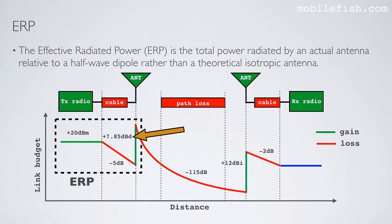The Effective Radiated Power, or ERP, is the total power radiated by an actual antenna relative to a half-wave dipole rather than a theoretical isotropic antenna.